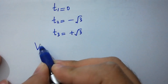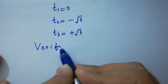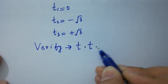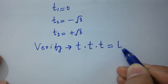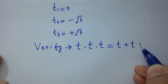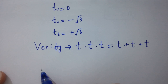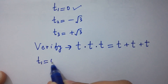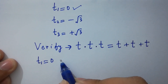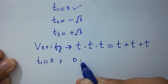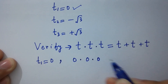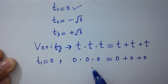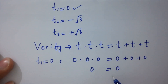Now I am going to verify t times t times t equals t plus t plus t for each solution. First, take t1 equals 0: it gives 0 times 0 times 0 equals 0 plus 0 plus 0, which is 0 equals 0. Left-hand side equals right-hand side.